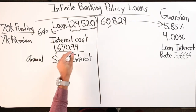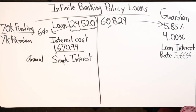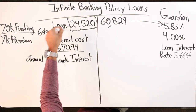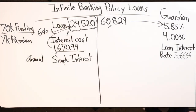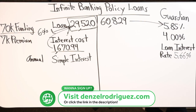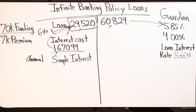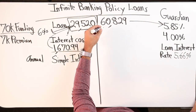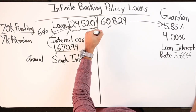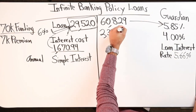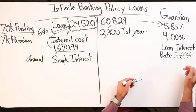The $60,829 still is in cash - this is Guardian's money that they loaned out to me, and that's what I'll pay back. I forget whether the $29,520 is already included in that $1,670.94 calculation. So on the low end: $60,829 times 4% - I should earn about $2,300 in interest in the first year.